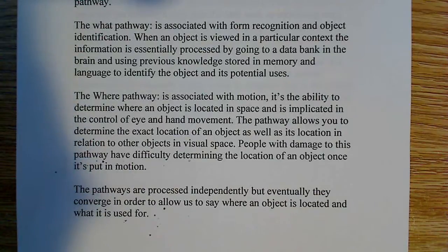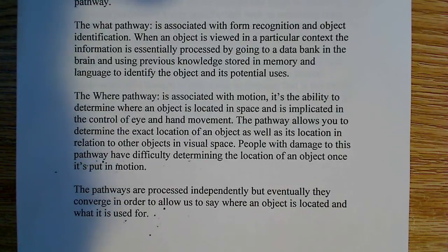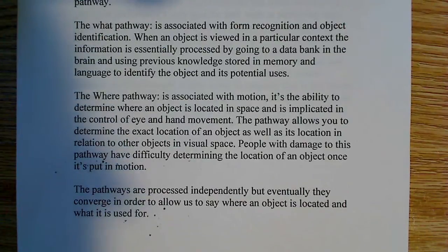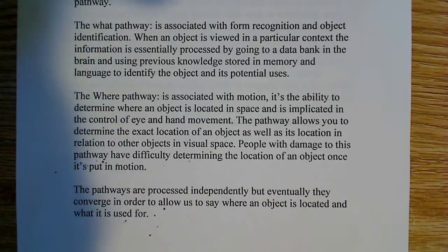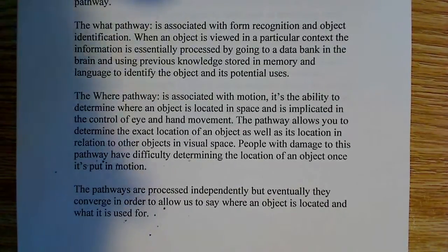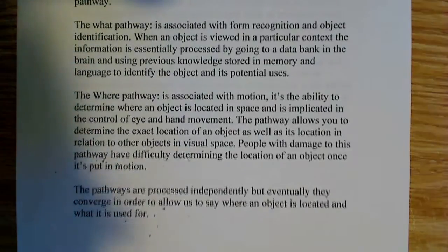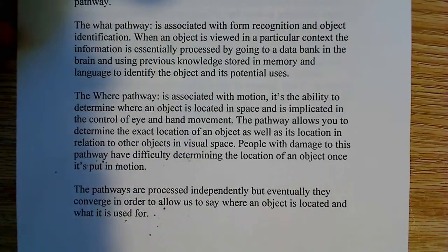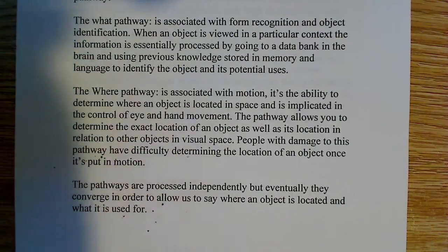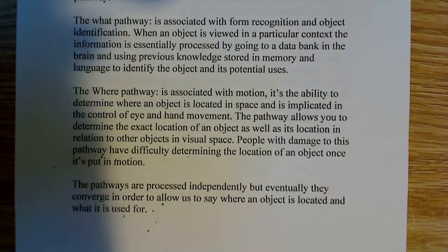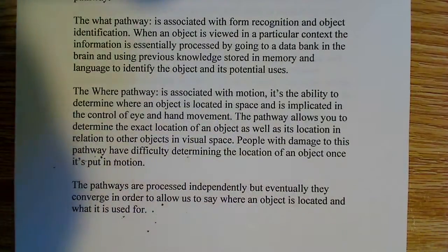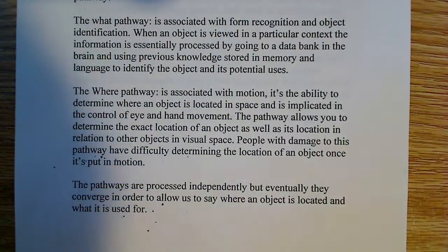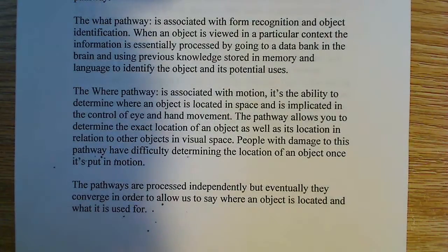There are tons of objects in space in our environment, and we have to make sense of how to navigate that space. This pathway helps with navigation. One of the things a robot can't really do is navigate a room if you put a chair in front of it — it doesn't know how to get around the chair. Some of that has to do with not completely understanding how this visual process works. People with damage to this pathway will have difficulty determining the location of an object once it's put in motion — they might be able to see the object when it's stationary, but have a very difficult time once it moves.